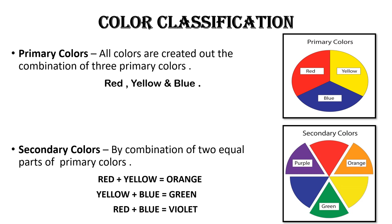Primary color means the basic colors from which all other colors in the world originate. All other colors are produced from primary colors. The three primary colors are red, yellow, and blue.